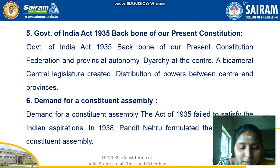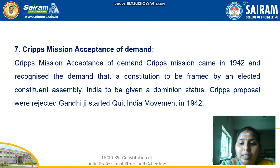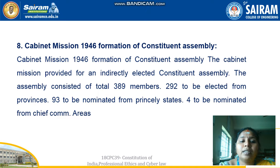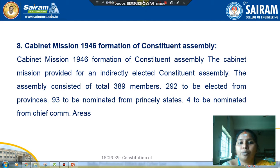The next milestone is the Cripps Mission — acceptance of the demand. It came in 1942 and recognized the demand that a constitution be framed by an elected constituent assembly, with India to be given dominion status. However, Cripps' proposals were rejected and Gandhiji started the Quit India Movement in 1942. Next is the Cabinet Mission and formation of the Constituent Assembly. The Cabinet Mission provided for an indirectly elected constituent assembly of 389 members — 292 to be elected from provinces, 93 to be nominated from princely states, and 4 to be nominated from chief commercial areas.